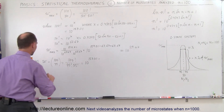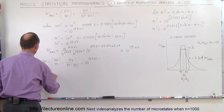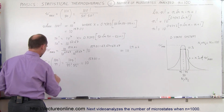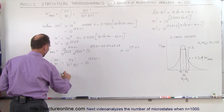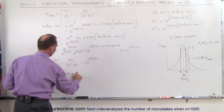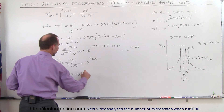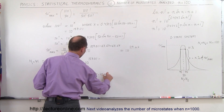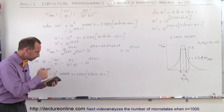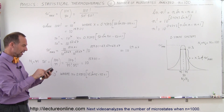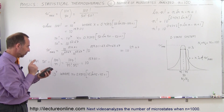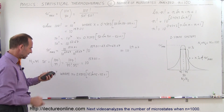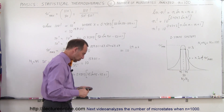We use Stirling's approximation for 45 factorial: it equals 10 to the x, where x equals 0.4343 times 45 times the natural log of 45 minus 45 plus 1. Taking the natural log of 45, multiplying by 45, subtracting 44, then multiplying by 0.4343, gives the exponent 55.829 — so 45 factorial equals 10 to the 55.29 power.